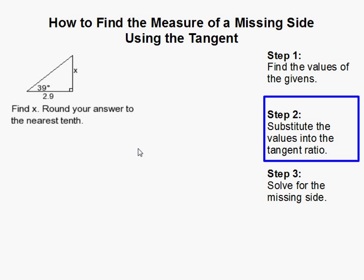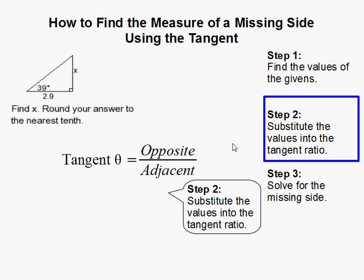Now that we have these values, we need to substitute them into the tangent ratio. Recall that tangent of theta, or our angle, is equal to the opposite side over the adjacent side.